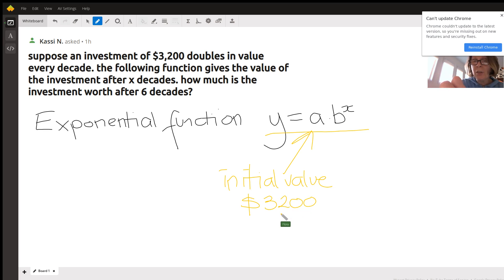Your b is your multiplier. What are you multiplying by? Well, here's the clue. It says the value is doubling. So that means you're multiplying it by 2.